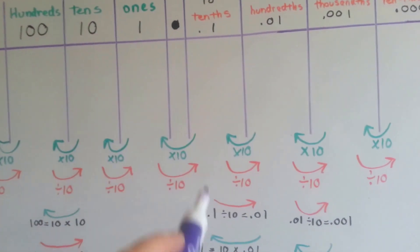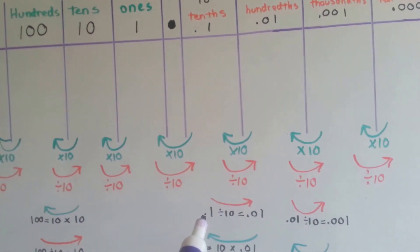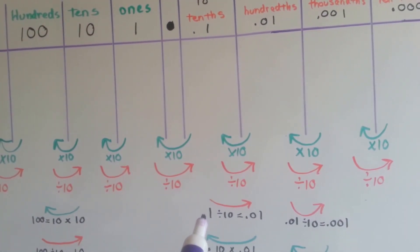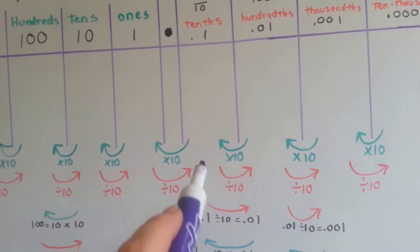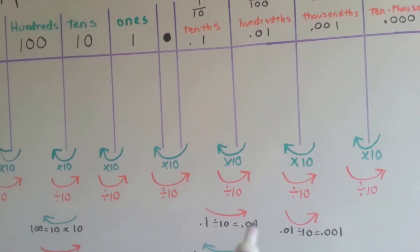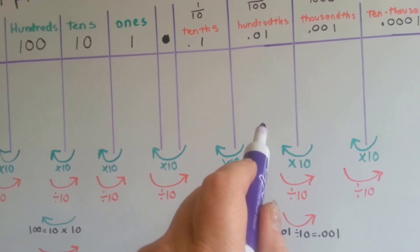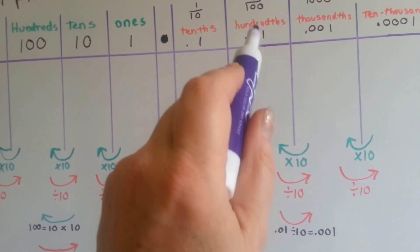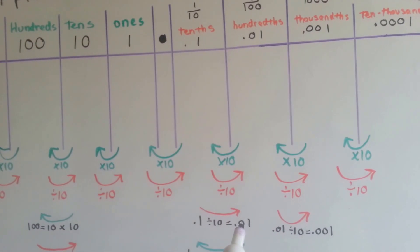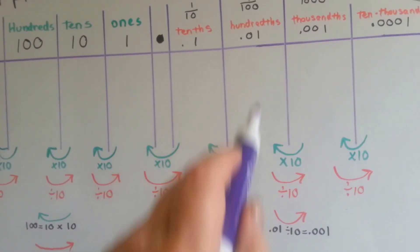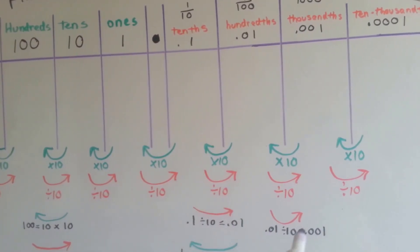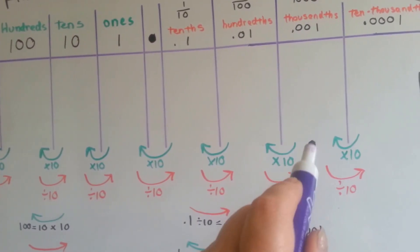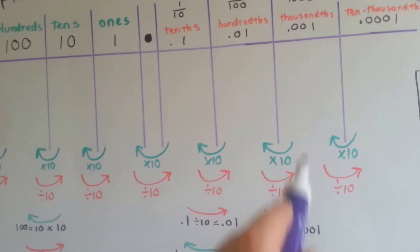Just as with decimals — if we had one-tenth, which is written as point one, and we divided it by ten, we would go to the next place value, hundredths. It becomes point zero one, which is hundredths. If I had hundredths and I divided it by ten, I become thousandths.